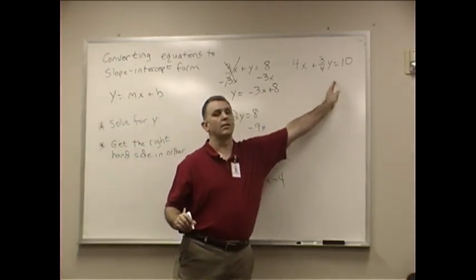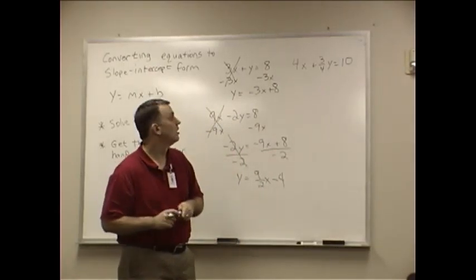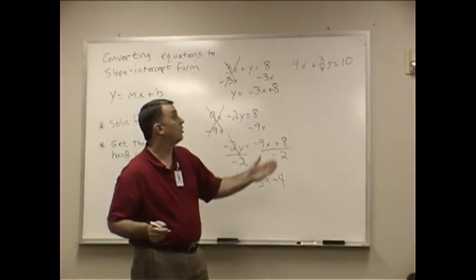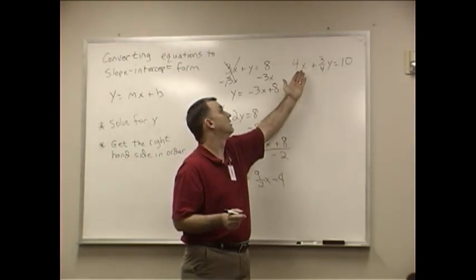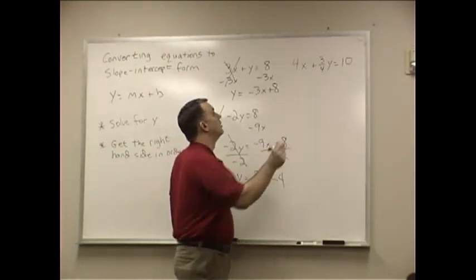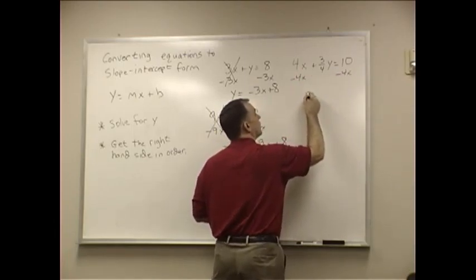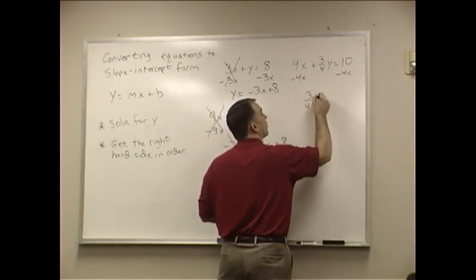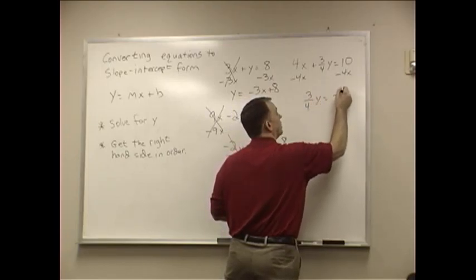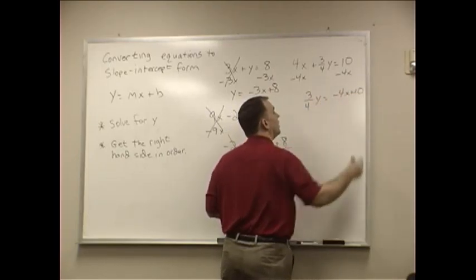Now the last one has a fraction in it, doesn't it? The first thing we notice is that, hey, that's on the wrong side. So I'm going to go ahead and go minus 4X to both sides. We still want to get it over there. So 3 fourths Y equals negative 4X plus 10.